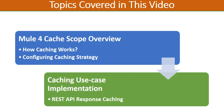Here is a little more detail about the topics we are going to cover in this video tutorial. First of all we will have a theoretical overview of Mule 4 cache scope, where I will explain how exactly caching works and how we configure a caching strategy. Then I will take a simple use case for a RESTful web service and see how we can implement caching and achieve the required performance improvements.